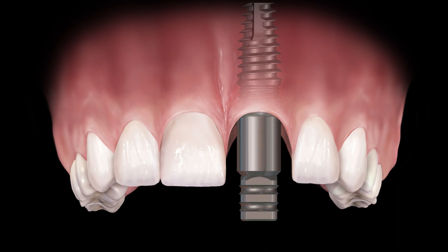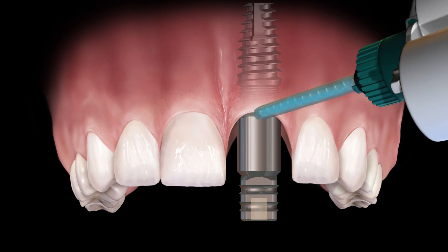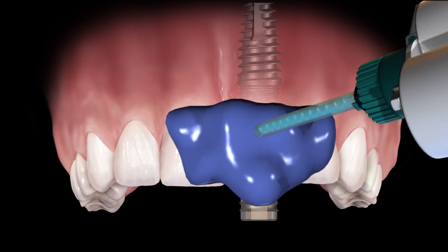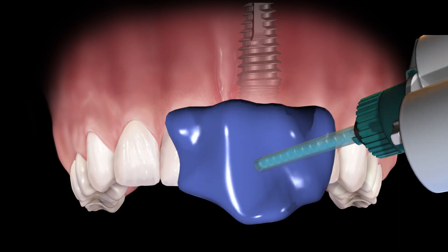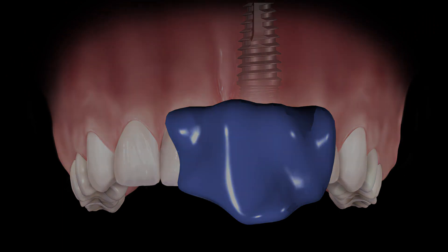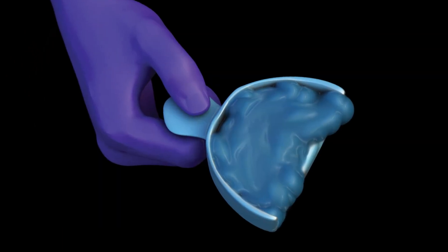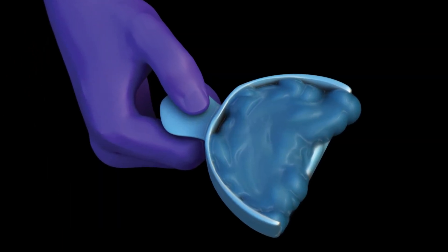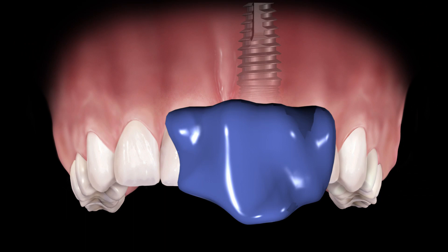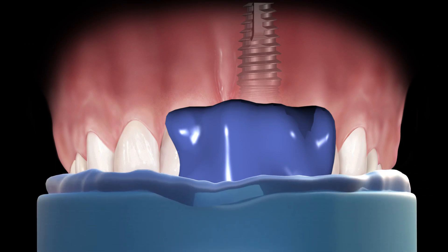Fill the top of the screw head with wax to prevent impression material from flowing into the head of the screw. Inject medium body impression material around the multi-purpose abutment, then inject medium body impression material into an impression tray. Take an impression.